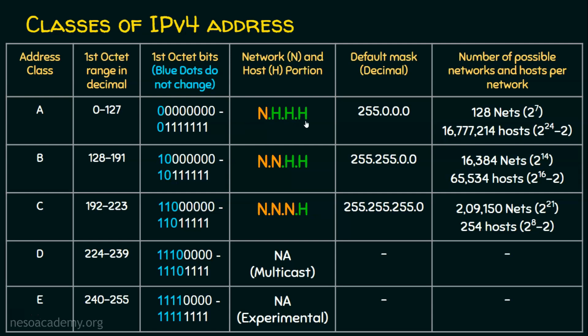When we talk about the number of possible networks and hosts per network, we know the first octet has 8 bits. Out of 8 bits, the first bit is reserved, so we have 7 bits. Therefore 2 to the power of 7 networks are possible — that's 128 networks. IP addresses start from 0 up to 127, so there are 128 networks possible.